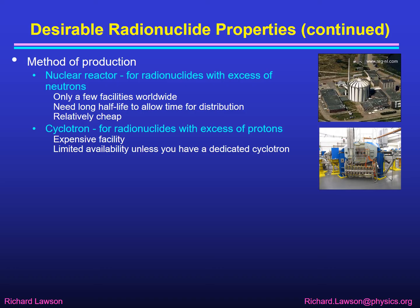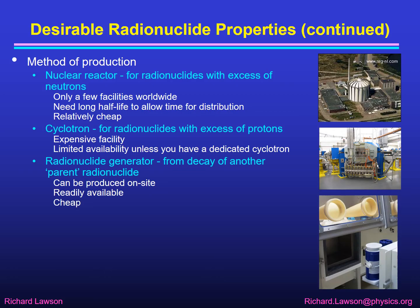Cyclotrons are used for radionuclides with an excess of protons, because the cyclotron can accelerate protons and let them hit targets of other stable nuclides to turn them into a radioactive nuclide with an excess of protons. These facilities are rather expensive and so if you're going to use a distant one it has limited availability unless you've got enough money to have a dedicated cyclotron on your own site. Radionuclide generators are useful where one nuclide decays into another — the parent decays into the one that we want — and these can be produced on site, are readily available, and are relatively cheap.